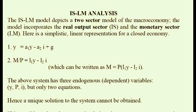On the left-hand side of equation two we have the real money supply, which is the nominal money supply M divided by the price level. If we allow prices to be held relatively constant, then the left-hand side of equation two is a constant and we have a two-equation system with two unknown variables: interest rate and output.